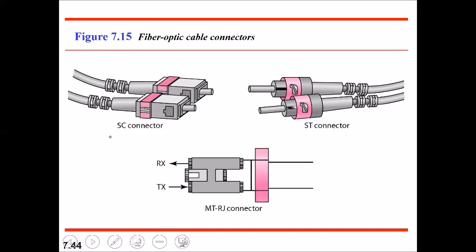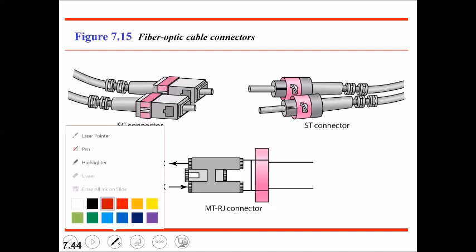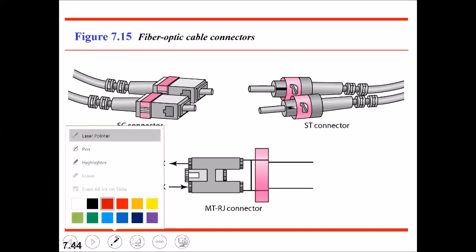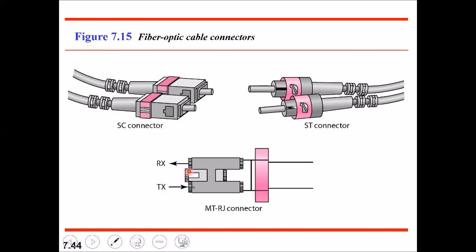Networking devices normally use the straight tip (ST) connector. The MT-RJ is another type of connector that is the same size as an RJ45. This third type of connector has two ports — one used for receiving and one used for transmitting.